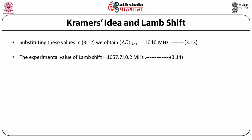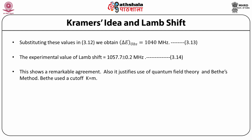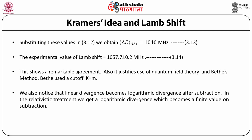The experimental value of Lamb shift is 1057.7 plus or minus 0.2 megahertz. So this shows a remarkable agreement. It also justifies the use of quantum field theory and Bethe's method of calculation. Bethe used a cutoff capital K of the order of m. We also notice that the linear divergence becomes logarithmic divergence after subtraction. In the relativistic treatment we get a logarithmic divergence which becomes a finite value on subtraction.